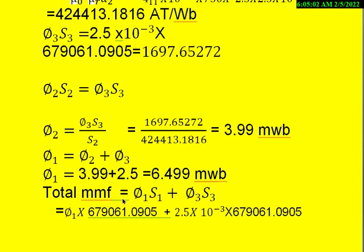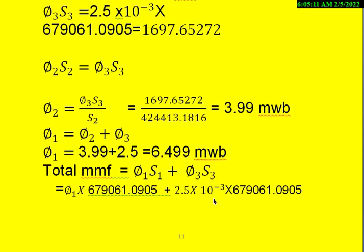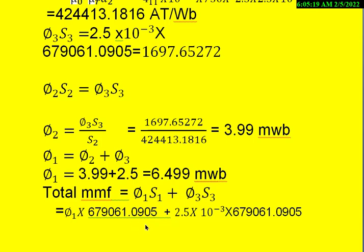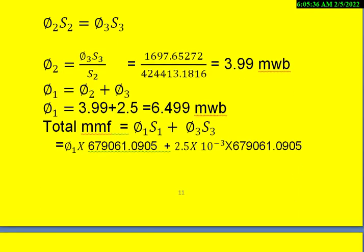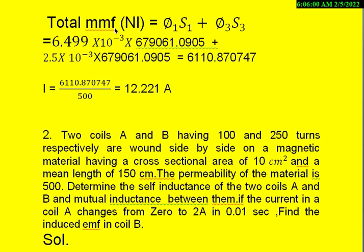So once we know this, we can calculate what is total MMF. That is nothing but phi 1 S1 plus phi 3 S3. So phi 1 is now known. Phi 1 into S1 we calculated as 679,061.0905 plus phi 3 is known that is 2.5 into 10 power minus 3. S3 also calculated as 679,061.0905. Then we can say the total MMF is nothing but NI is equal to phi 1 S1 plus phi 3 S3. So once we calculate that, from this we can calculate what is the current flowing in the coil that is equal to I is equal to total MMF divided by number of turns that is 500. So we get here 12.221 amperes.